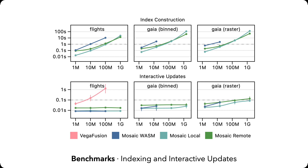With indexes in place, Mosaic supports real-time interactive updates, even between high-resolution raster visualizations. Vega Fusion is not competitive due to its lack of indexing. And prior indexing systems, such as IMENS and FALCON, also fail at this scale, as they involve dense indices that grow too large for main memory.